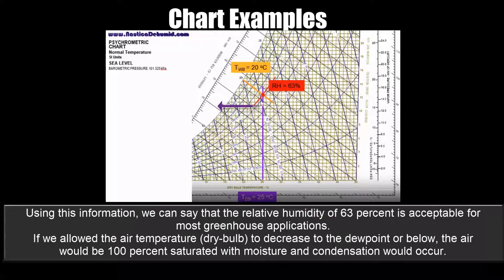If we allow the air temperature, dry bulb, to decrease to the dew point or below, the air would be 100% saturated with moisture and condensation would occur.